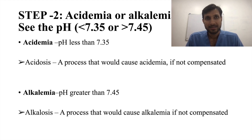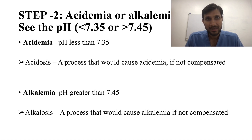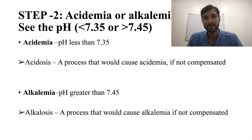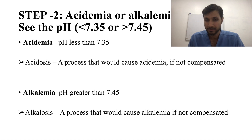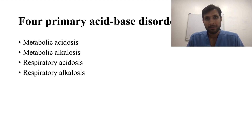Step 2 is determining whether the patient is acidemic or alkalemic. We look at the pH — if it is less than 7.35, acidemia is present; if it is more than 7.45, alkalemia is present. Acidosis is defined as a process that would cause acidemia if not compensated. There are four primary acid-base disorders: metabolic acidosis, metabolic alkalosis, respiratory acidosis, and respiratory alkalosis.